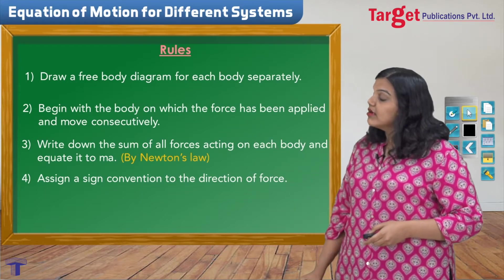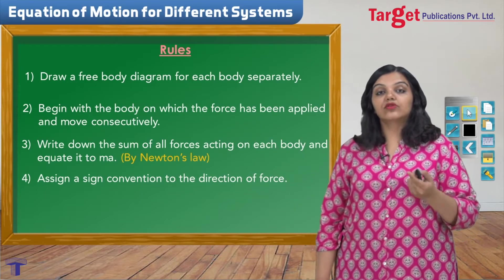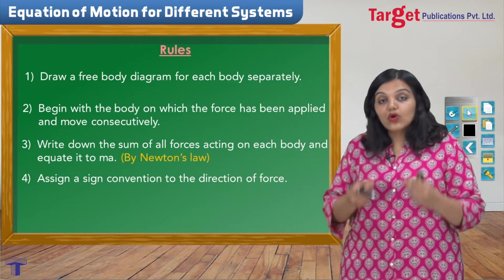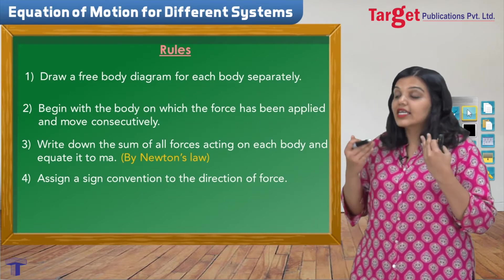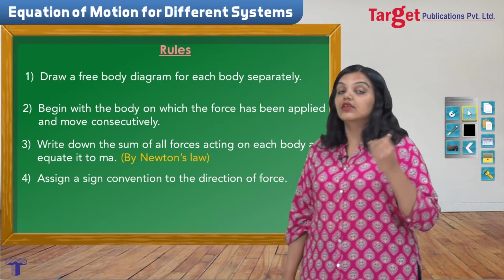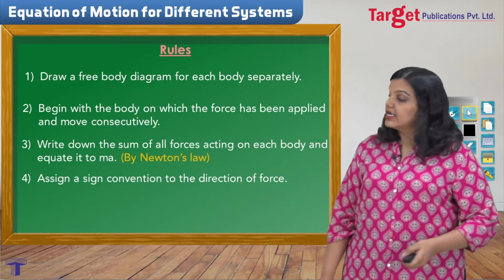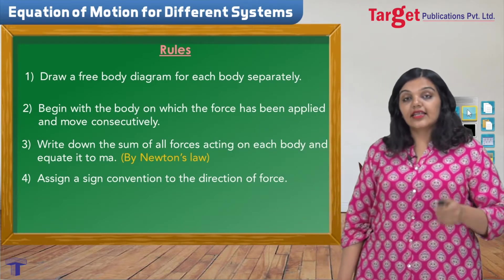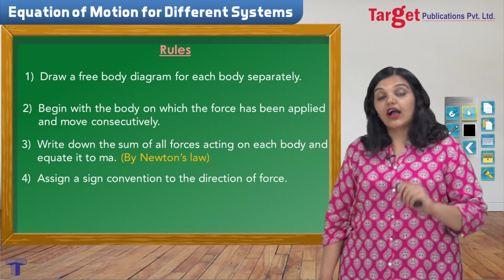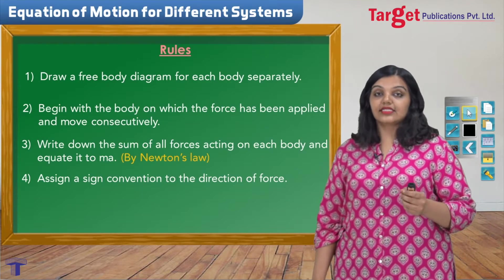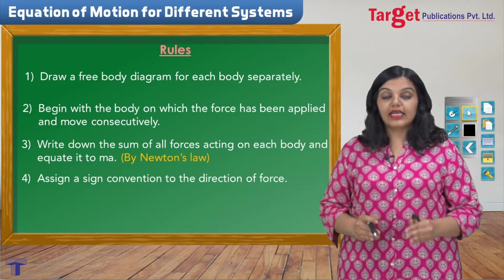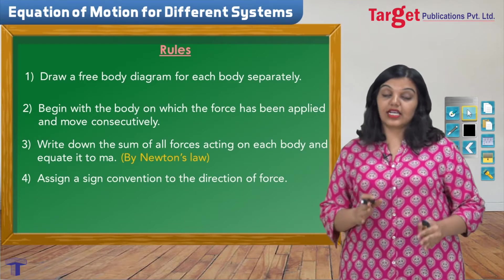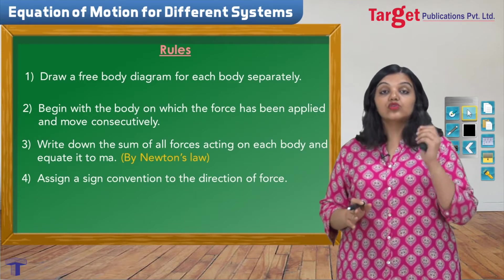Similarly, if I look at the third point, I am obviously talking about those systems in which mass is constant — that is, for those systems in which I can apply F equals MA in accordance with Newton's second law. Coming to the fourth point, assigning a sign convention is entirely up to you. You could assign a sign convention completely different from mine as long as you are consistent with that sign convention throughout the sum.